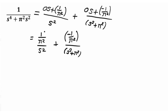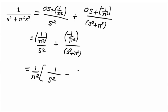So the simplified partial fraction result is: 1 upon pi squared times (1 upon s squared) minus 1 upon pi squared times (1 upon s squared plus pi squared).